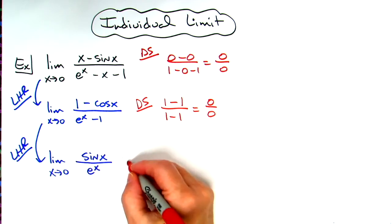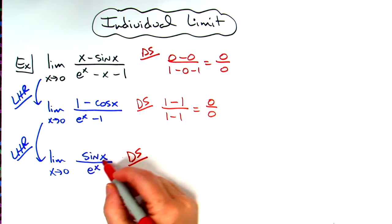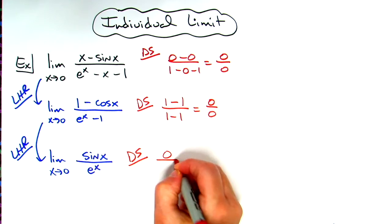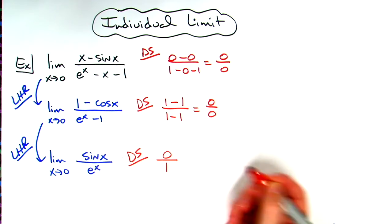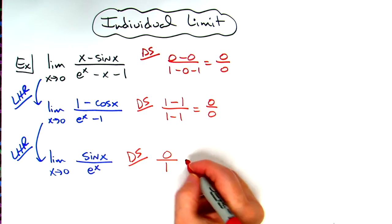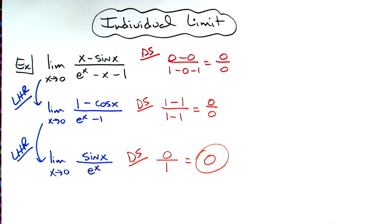I'll try a direct substitution again. Plugging in zero: sine of zero is zero. E to the zero is one. Zero divided by one is zero. I've finally arrived at a final answer. No more indeterminate forms.